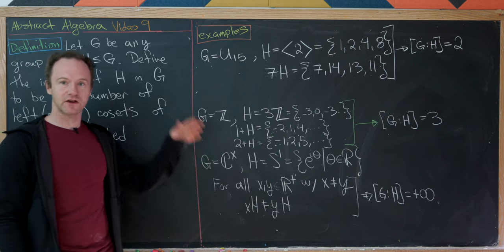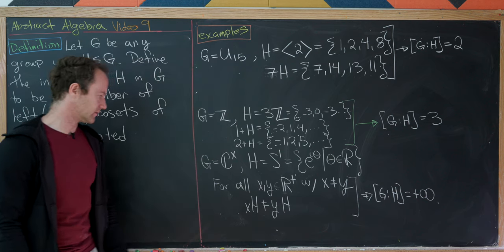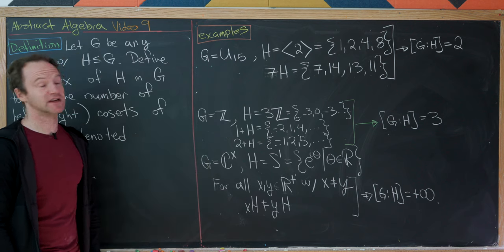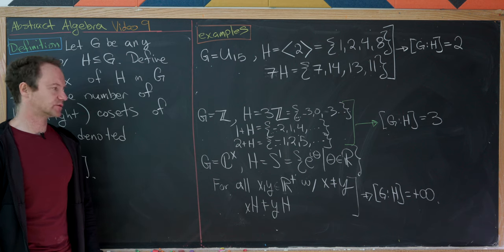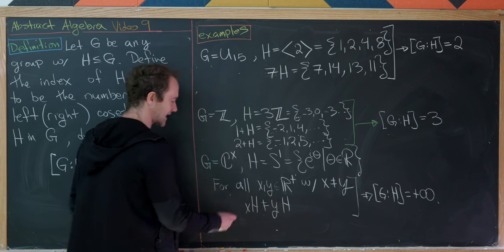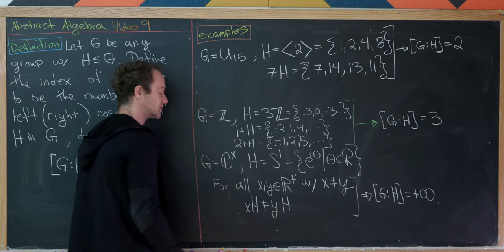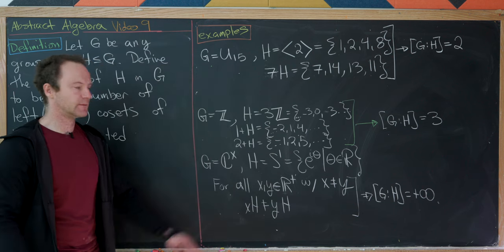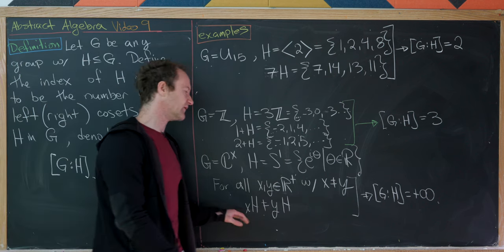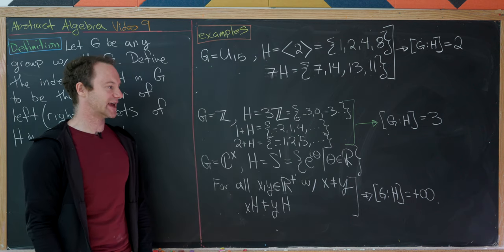We can also have an infinite group with an infinite index. Take G to be the multiplicative complex numbers and H the circle group. For any two distinct positive real numbers x and y, the cosets xH and yH are different. Since there are infinitely many positive real numbers, there are infinitely many cosets, so [G:H] is infinite.